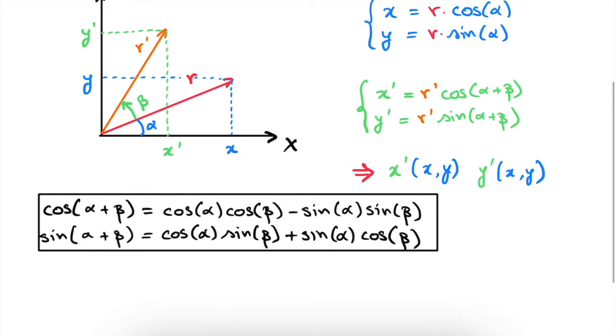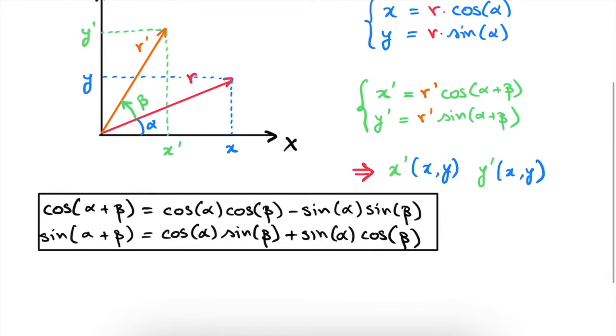Additionally we use the fact that by rotating our vector we did not change its magnitude. Its length stayed the same. So we know that r prime is actually equal to r.